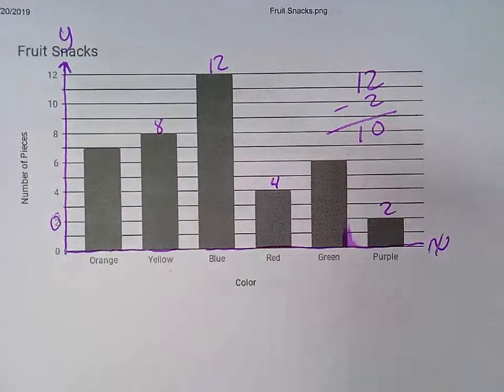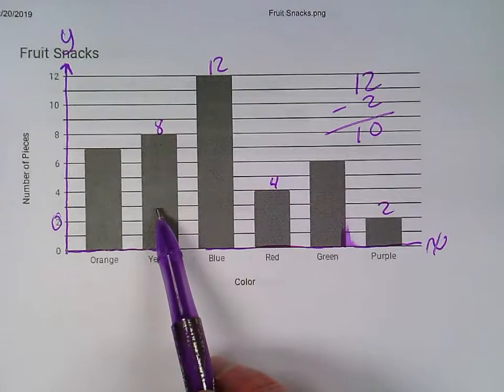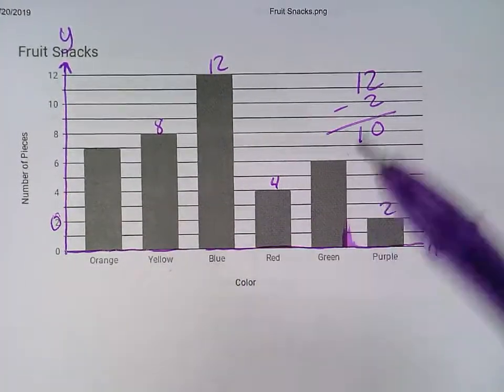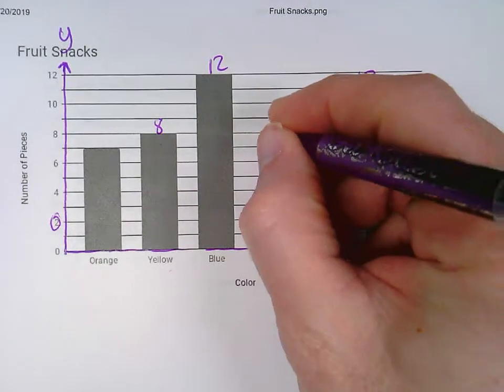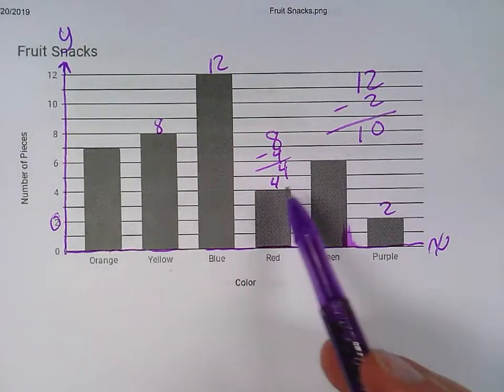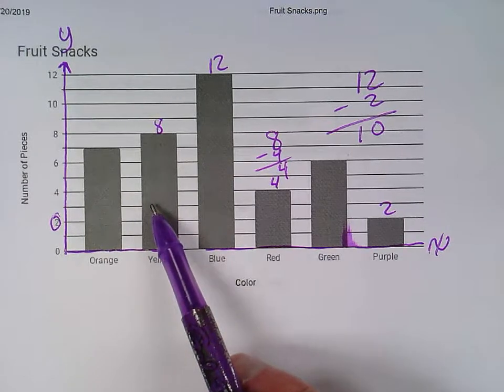So to figure out how many more yellow pieces were found than red pieces, I'm going to take 8 minus 4, and 8 minus 4 is 4. So there was 4 more yellow pieces than red pieces.